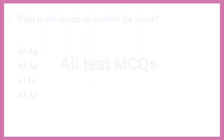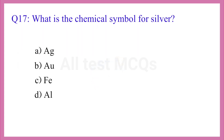Question No. 17. What is the chemical symbol for silver? The correct answer is option A. Ag.